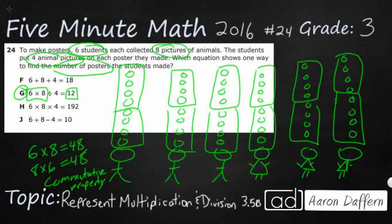Let's take a look at why the other ones are incorrect. Well, if you take a look at F, they just took each of the three numbers and they just added them: 6 + 8 + 4. That does make 18, but that doesn't make any sense.